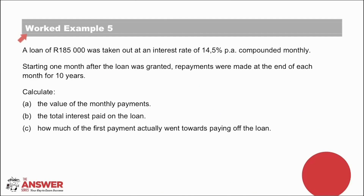Let's look at another example with a number of subsections. A loan of R185,000 was taken out at an interest rate of 14.5% per annum compounded monthly. Starting one month after the loan was granted, repayments were made at the end of each month for 10 years. It is a good idea to read the whole question first. You are asked to calculate: (A) the value of the monthly payments, (B) the total interest paid on the loan, and (C) how much of the first payment actually went towards paying off the loan. Pause the video to give part A a try.